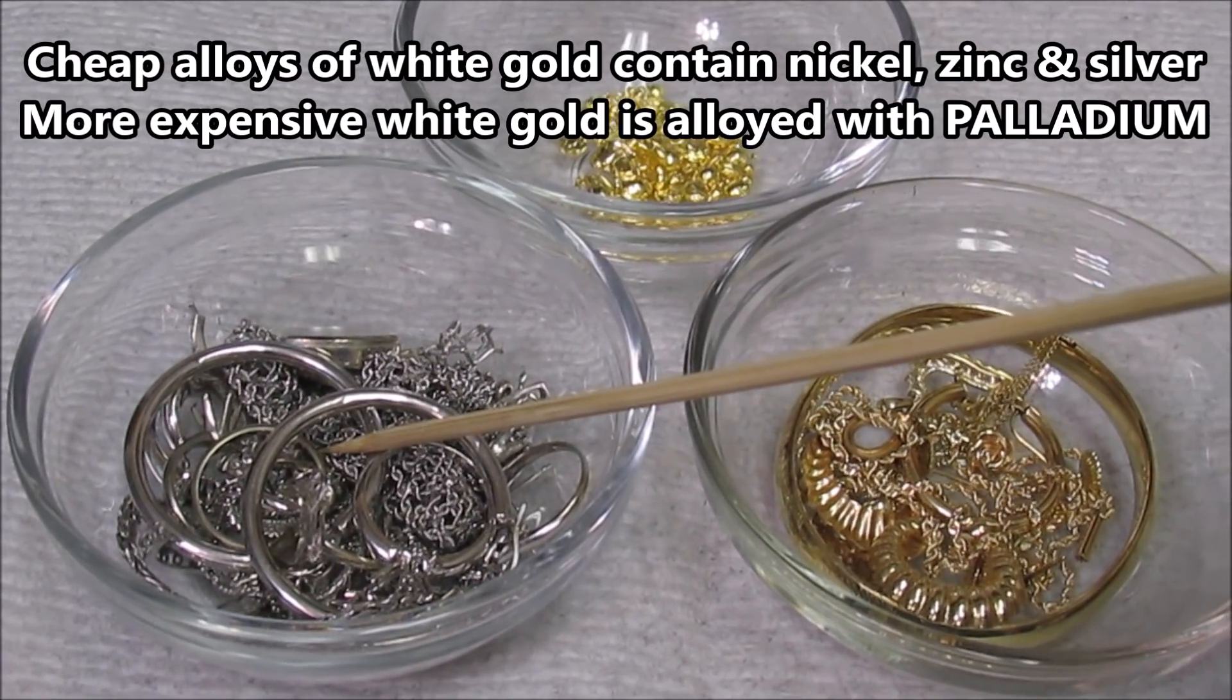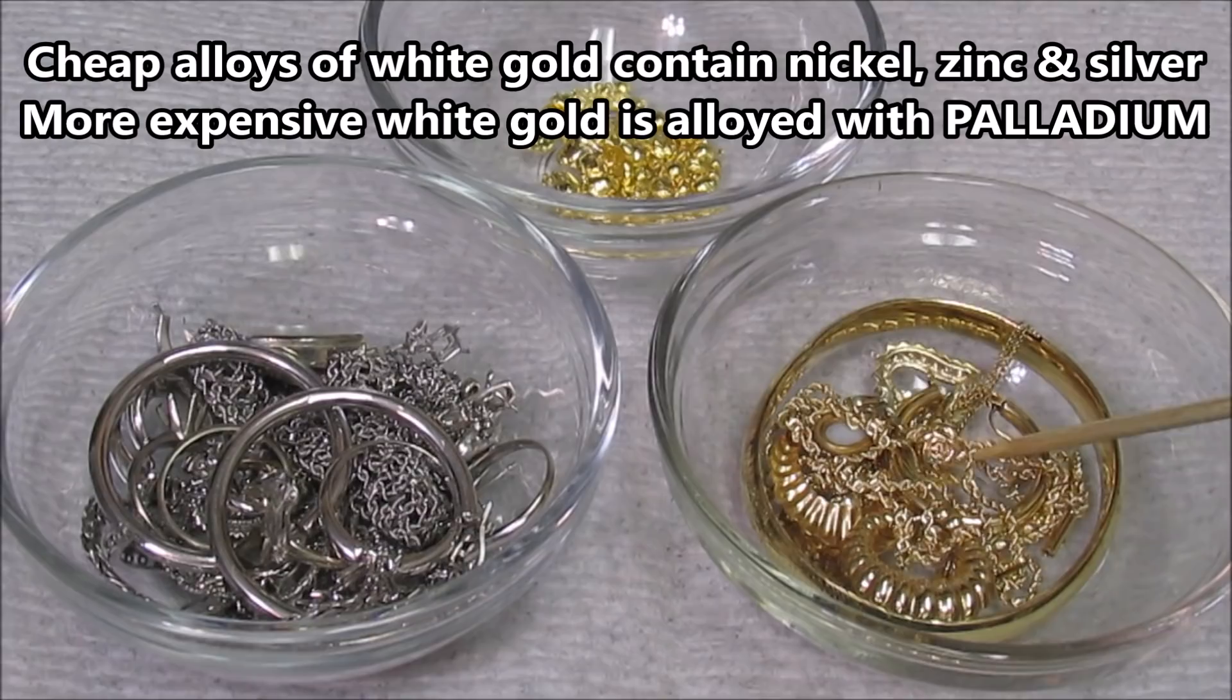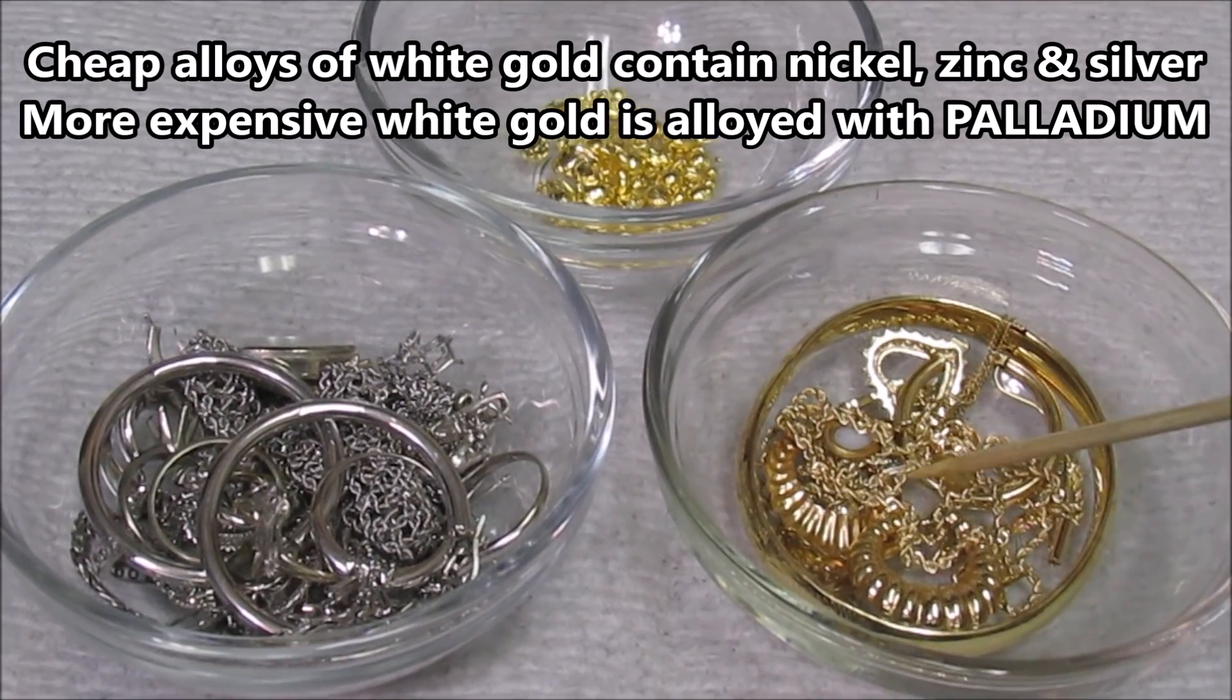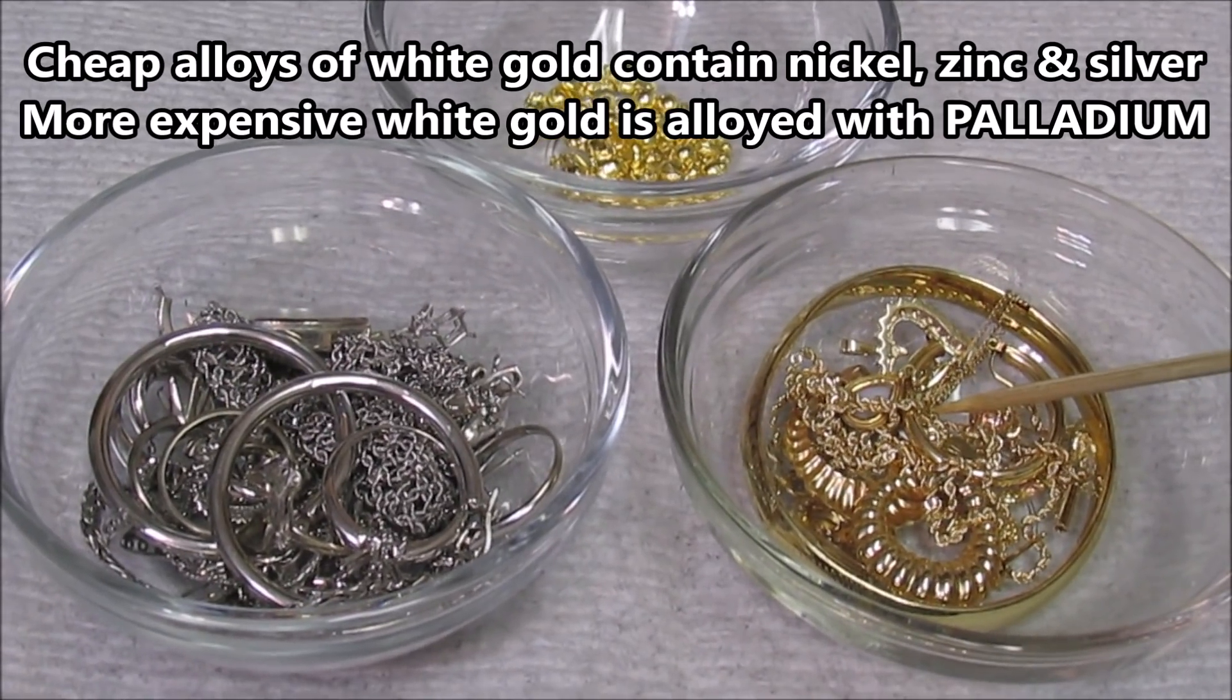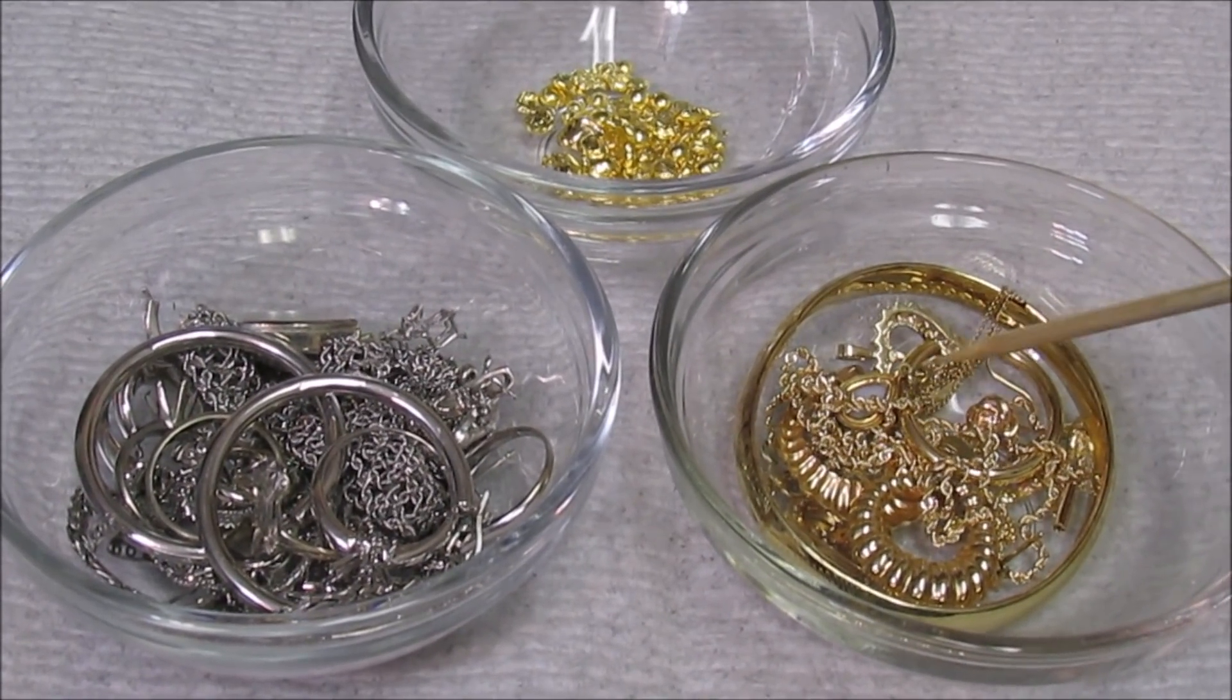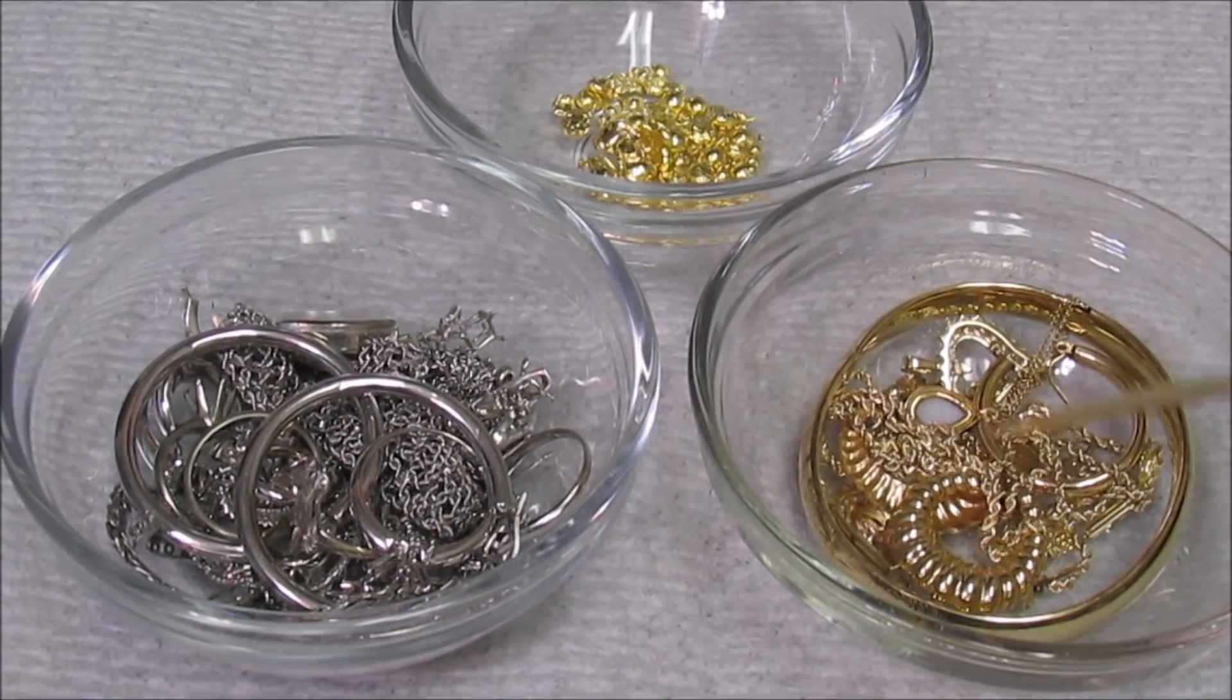To get the metal to look this yellow, they reduce the number of white metals that they add to this alloy and increase the amount of copper, and this is the color that is achieved by adding that mixture.